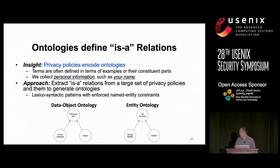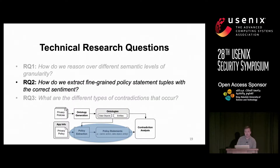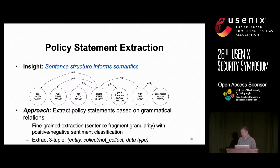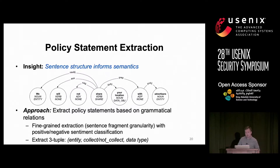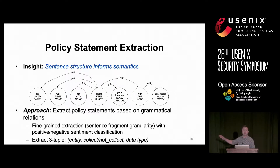The next challenge is we need to extract fine-grained policy statement tuples and model positive and negative sentiment — meaning we need to know if they're talking about sharing or not sharing, collecting versus not collecting. We do so using grammatical structure and dependency-based parse trees to extract a three-tuple: some entity collects (or does not collect) some data type. It's worth mentioning that we also handle sharing and collection statements, which get simplified down to this form with a set of transformation rules documented in the paper.